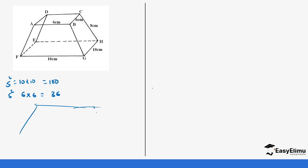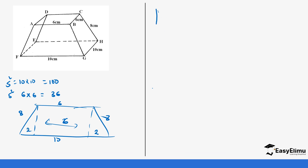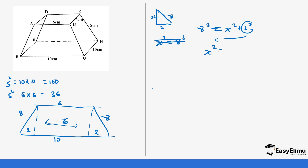Now looking at the trapezium: the slant side is 8, the top is 6, and the bottom is 10. If we drop a perpendicular bisector, remember the distance between the two bisectors is 6, so this remaining side is 2 centimeters on each side. Using Pythagoras theorem: 8 squared equals x squared plus 2 squared. Rearranging, x squared equals 8 squared minus 2 squared, which is 64 minus 4 equals 60. Taking the square root, x equals the square root of 60, which gives us 7.74.